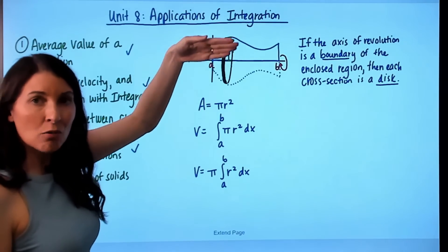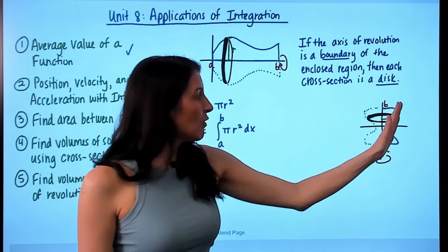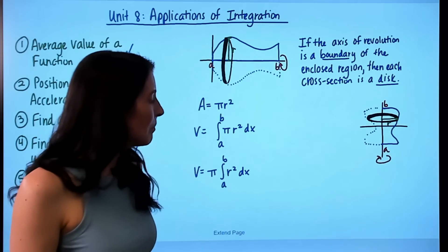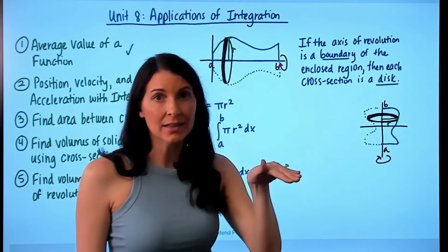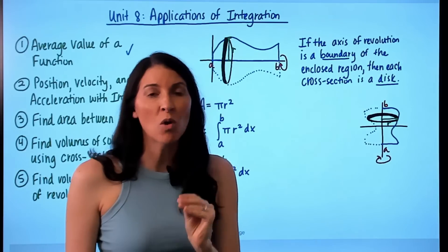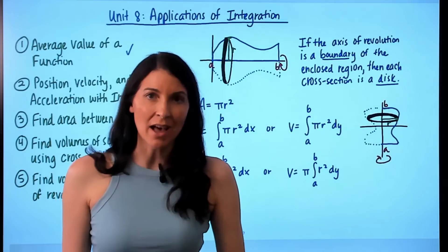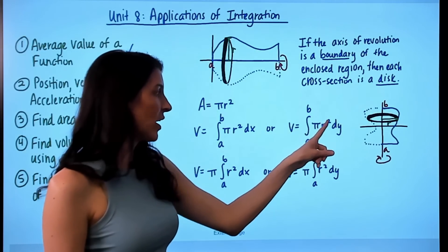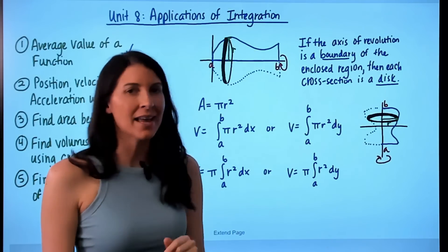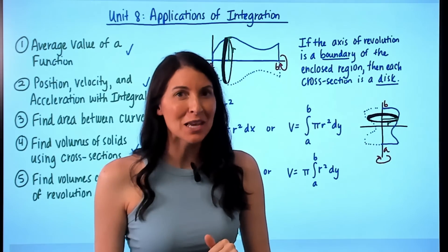What if you revolve a graph around a vertical axis, such as the y-axis or any vertical line? In that case, the radius runs horizontally, so you find it by taking the right function minus the left function, written in terms of y. Set up the integral from a to b where a and b are y values, with π times radius squared dy, writing the radius in terms of y. You can bring the constant π out in front.